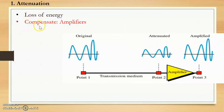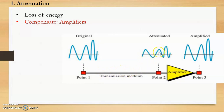To overcome or compensate for this loss of energy, amplifiers are used. In the figure, at point 1 we have the original signal. After sending it over the transmission medium, the signal gets attenuated at point 2. Then after passing through an amplifier, the energy of the signal is increased again, so at point 3 the signal is amplified.